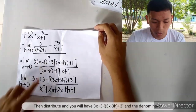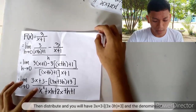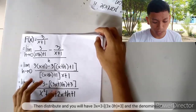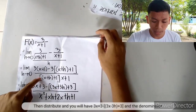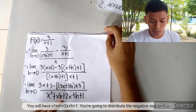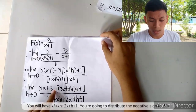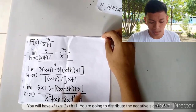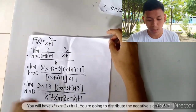Then distribute: we will have the limit of 3x plus 3, minus 3x plus 3h plus 3. The denominator becomes x squared plus hx plus 2x plus h plus 1.